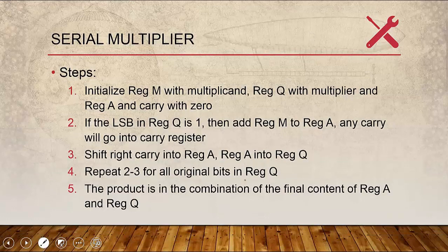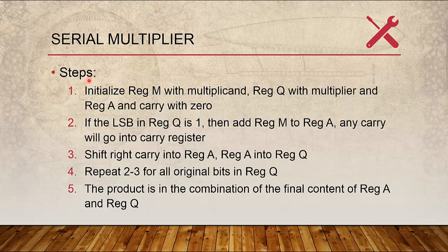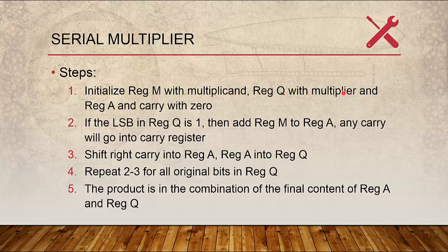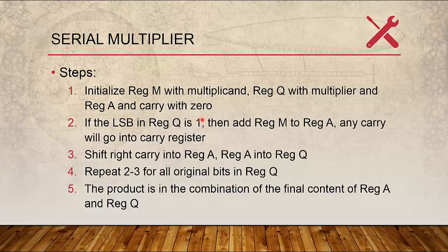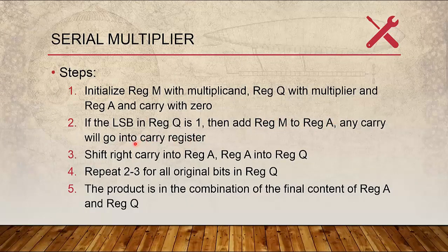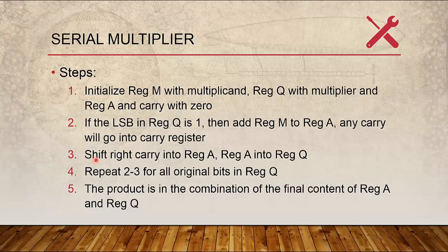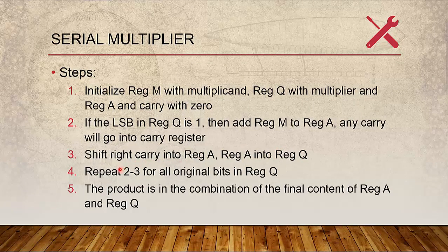Let us give the official steps for Serial Multiplier. First, we have to initialize register M with Multiplicand, Q with Multiplier, register A with 0 and also the Carry with 0. If LSB in Q is 1, then add register M to A. Any Carry will go into Carry Register. After that, shift right the Carry into register A and register A into register Q. It's a 1-bit shift right. And then we repeat steps 2 and 3 for all bits in register Q. Finally, the product is in the combination of the final content of register A and register Q.